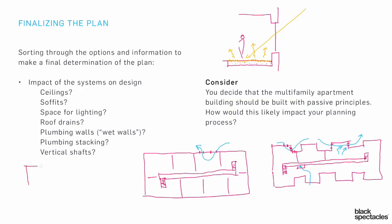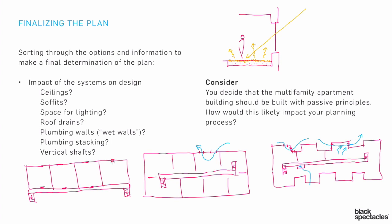Once we said it was about convective currents, the plan of the building changed. It might change so much that we actually don't do it as a double-loaded corridor. Maybe we do a simple building with a corridor on the end — stairs on each side, an outdoor corridor — and each unit has a window on one side and a window on the other. That clearly makes it possible for air to move right through the space. The fact that we said we're going to follow passive design principles, specifically convective currents, is dramatically changing our floor plan.